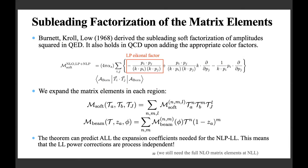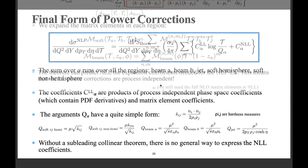There are theorems that predict part of the NLP contributions. Burnett, Kroll, and Low derived the sub-leading soft factorization of amplitudes in QED, and it can be applied in QCD by accounting for appropriate color factors. The formula gives leading power plus next-to-leading power leading log contributions using only the Born-squared amplitudes — you don't need the full matrix element. This allows you to extract and check all coefficients of the matrix elements in the various regions against the full matrix element expansion.